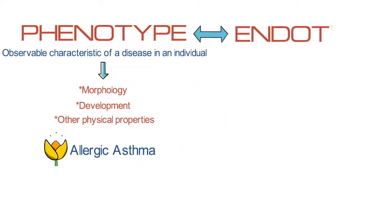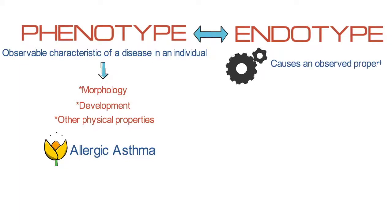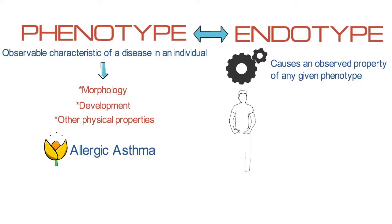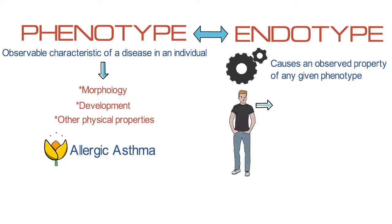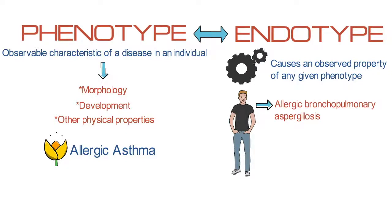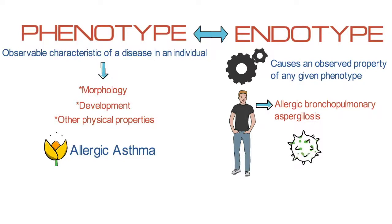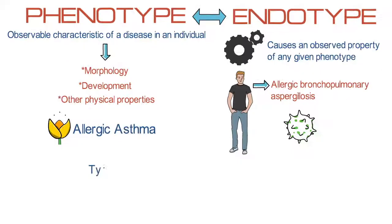An endotype is a specific biologic mechanism that causes an observed property of any given phenotype. For example, a patient with allergic bronchopulmonary aspergillosis has a severe reaction to molds that causes their allergic type of asthma.